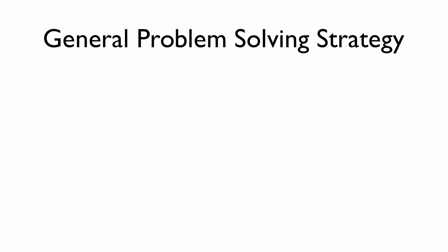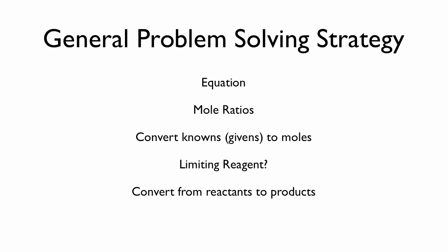Let's dig in by going over a general strategy for solving chemistry problems. First thing we need is the equation for the chemical reaction. The second thing we're going to need is the mole ratios of the reactants to products or multiple reactants or multiple products to each other. We're also going to need to convert any given information to moles. We need to ask ourselves, is there a limiting reagent in the situation at hand? And finally, we need to convert from reactants to products. Actually, there's one last step. Does the final answer need to be converted from moles back to some other human scale unit?